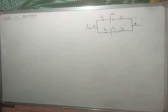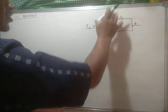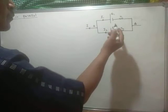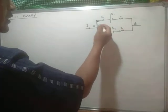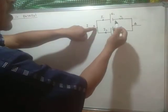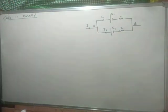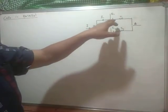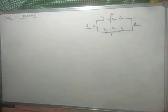The next topic is about the combinations of cells in parallel. Looking at this figure, this is the arrangement of how cells are connected in parallel. The positive terminal of each cell is connected to a single point A, and the negative terminal of each cell is connected to another single point B, such that the potential difference across the first cell and the second cell is the same. This type of combination of cells is known as parallel combination.